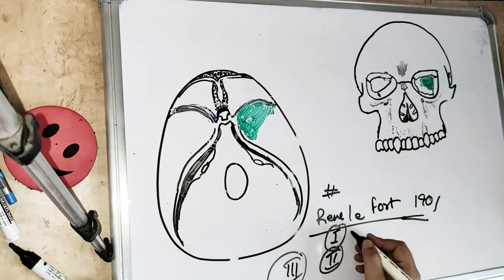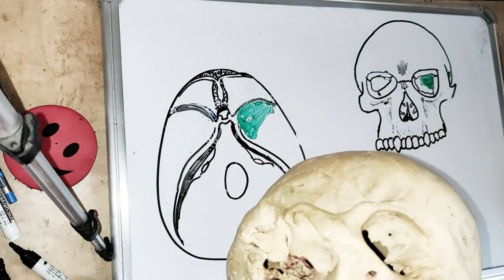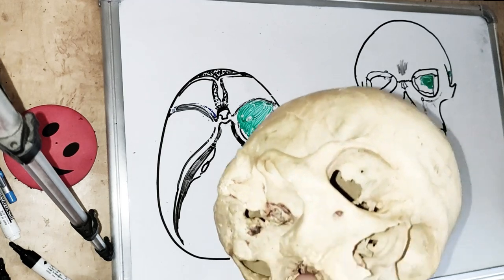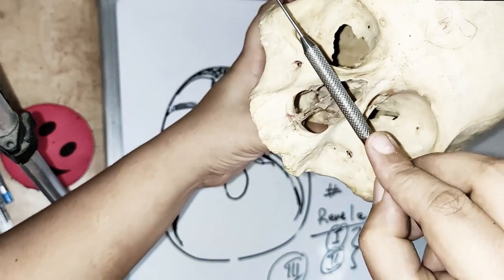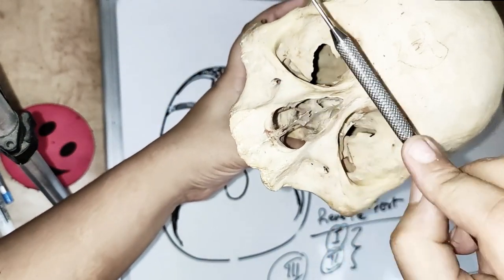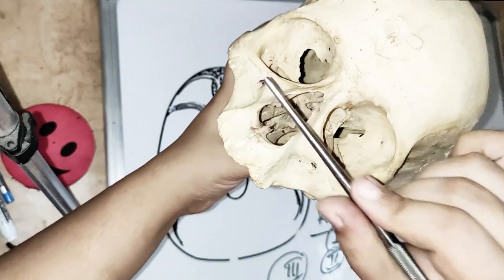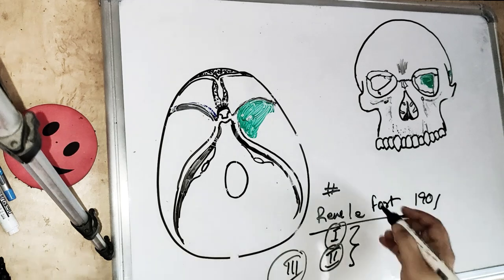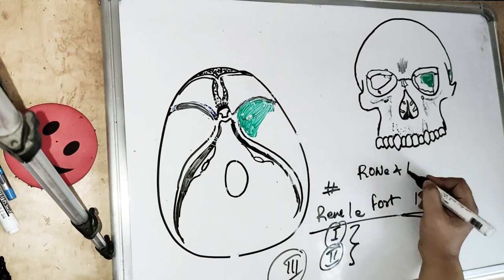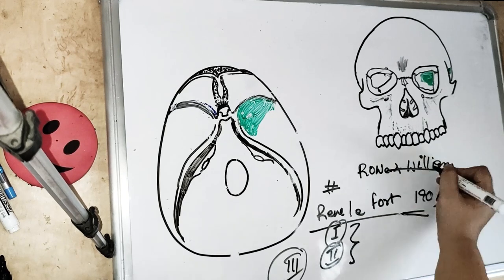Le Fort 1 and Le Fort 2 are subzygomatic fractures — these fractures are below the zygomatic arch. The Le Fort 3 fracture is above the zygomatic arch, making it a suprazygomatic fracture. So Le Fort 1 and Le Fort 2 are subzygomatic fractures, and Le Fort 3 is the suprazygomatic fracture which is above the zygomatic arch.